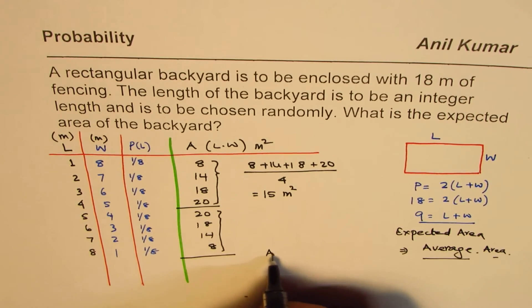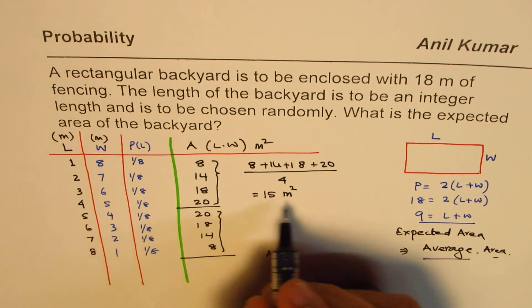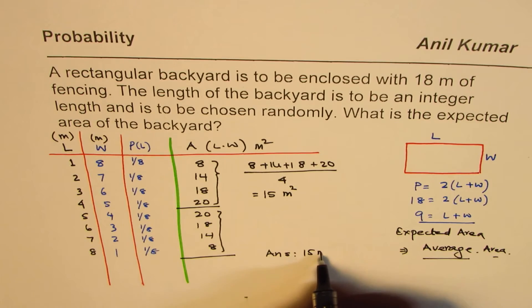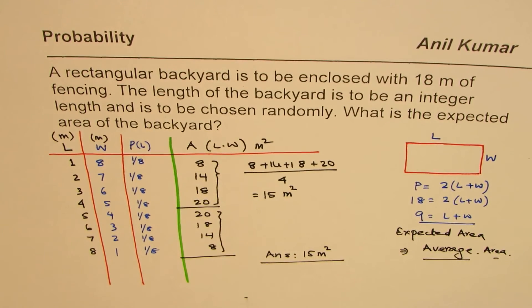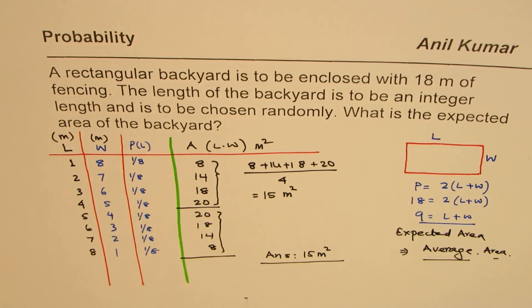So we say, well, our answer is that average area is 15 meters squared. Average area is the expected area. So this is a concept. So if you use that concept, it's kind of straightforward. I'm Anil Kumar and I hope that helps. Thank you and all the best.